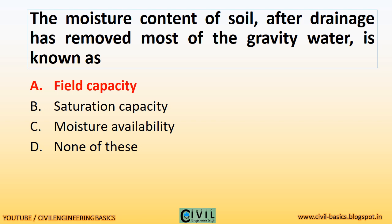The moisture content of soil after drainage has removed most of the gravity water is known as field capacity.